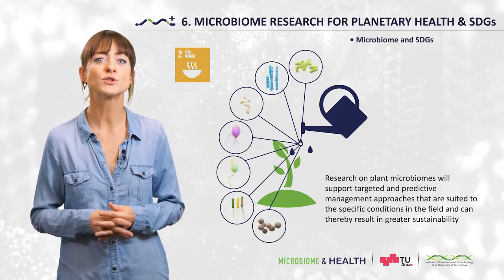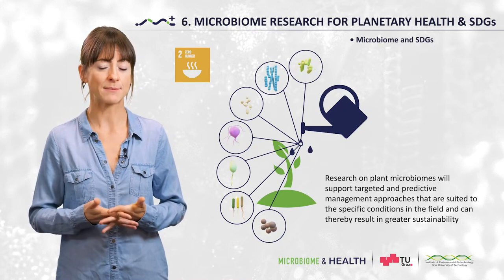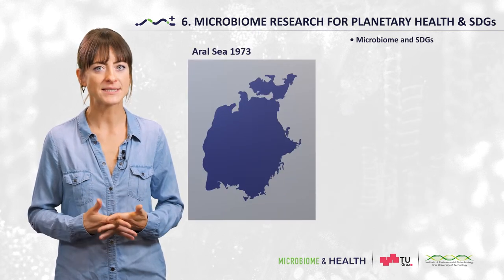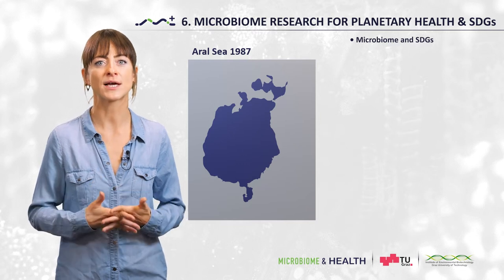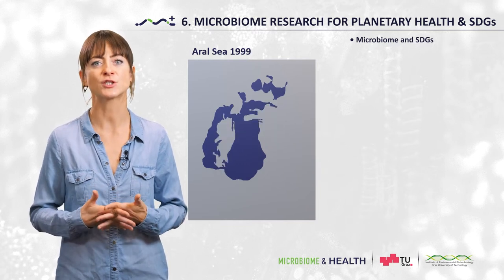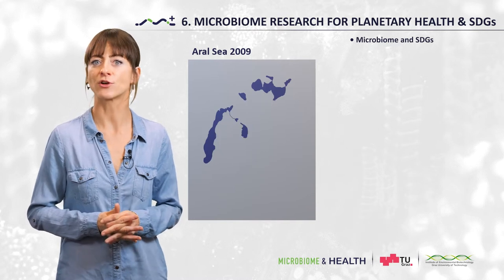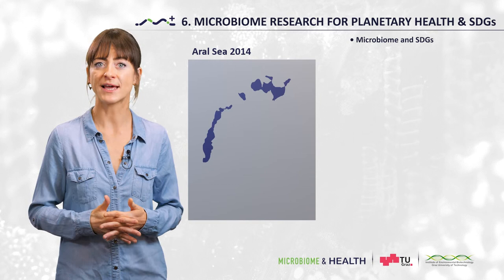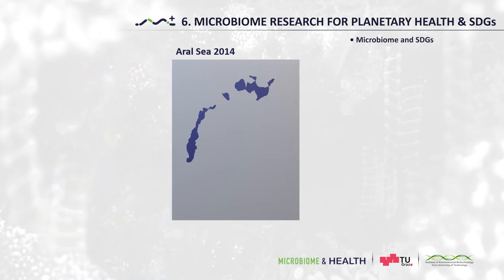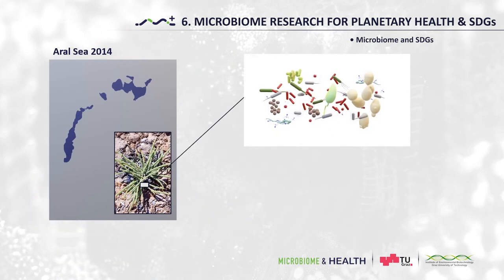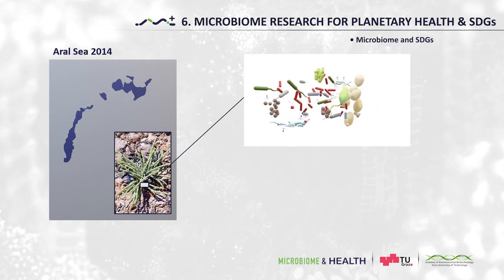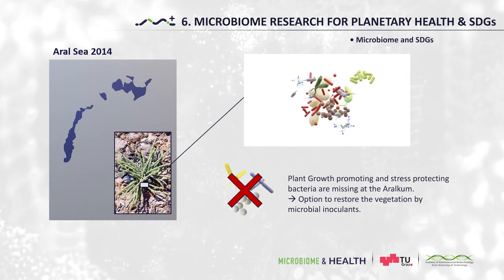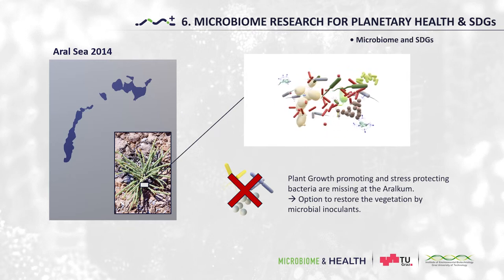Microbes can also be used to recover natural environments. One example is the Aral Sea. The shrinking of the Aral Sea is an environmental disaster caused by unbending agricultural intensification in the catchment area of the lake. High concentrations of toxic agents are drastically increased in soil, which is reflected by serious public health problems. We studied the microbiome in the dried basin, now called Aral Cum. Plant growth promoting and stress protecting bacteria are missing there, which offers an option to restore the vegetation by microbial inoculants.